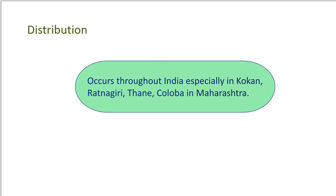Such crabs occur throughout India, especially in the Konkan region, which is under heavy rainfall and has a lot of coastal area. At coastal regions like Konkan, Ratnagiri, Thane and Kolaba — these are some places in Maharashtra where such freshwater crabs are commonly found.